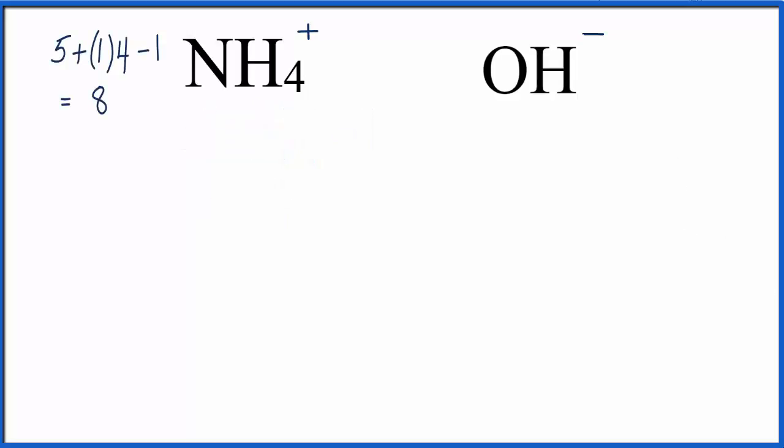We'll start by putting the nitrogen in the center of the Lewis structure, and then we'll put the hydrogens around that. So we have 8 total valence electrons. Let's form chemical bonds between each hydrogen atom and that central nitrogen. So we'll put 2 here. There's a chemical bond. And at this point, we've used up all 8 valence electrons.